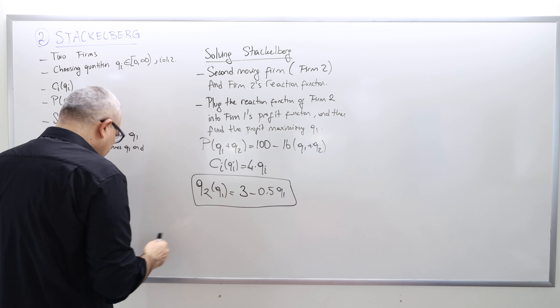So that's exactly how we solve Stackelberg competition. Step one: calculate the reaction function for the second moving firm. Step two: plug that into the first firm's profit function, optimize, and find the optimal quantity. Then plug that quantity back into the reaction function for the second moving firm. And you have the optimal quantities in Stackelberg competition.